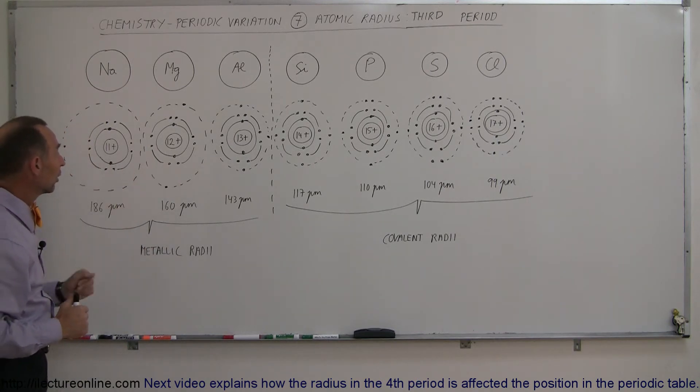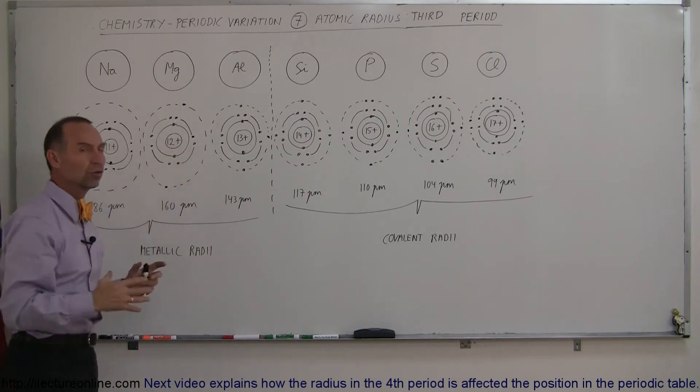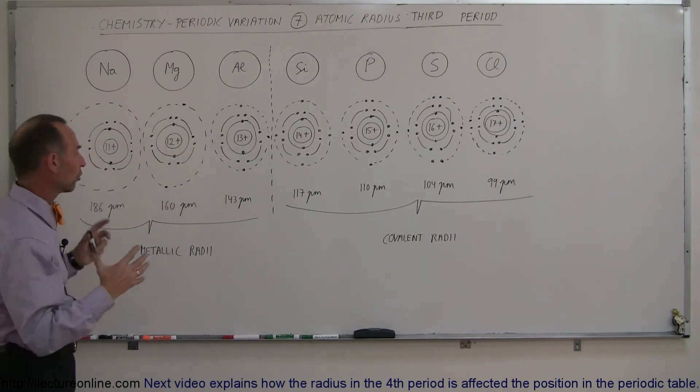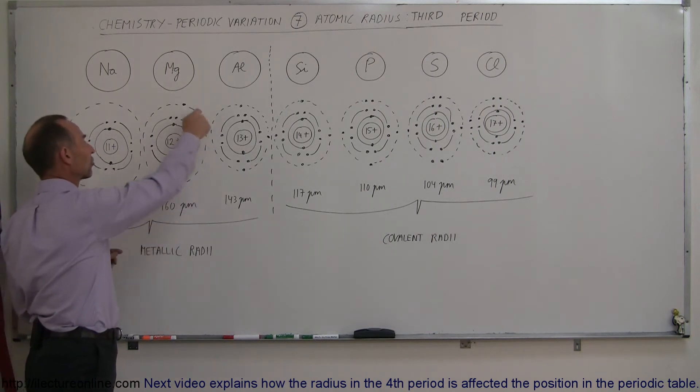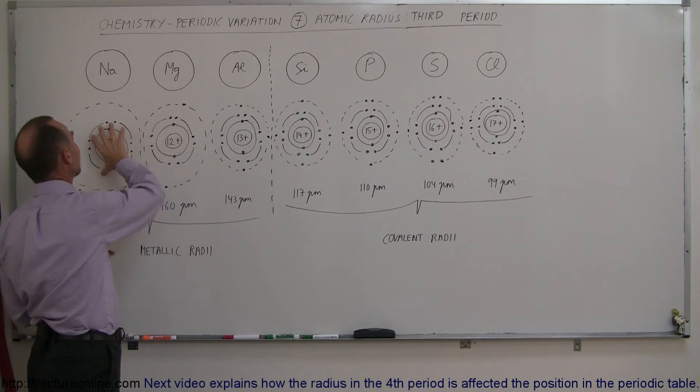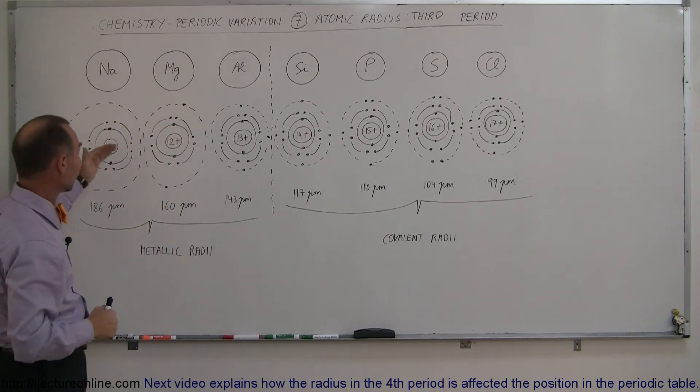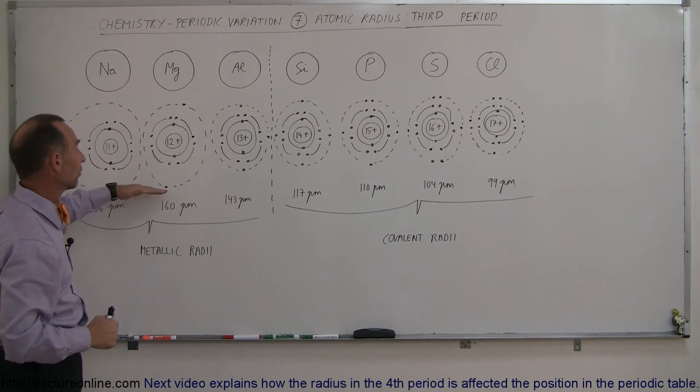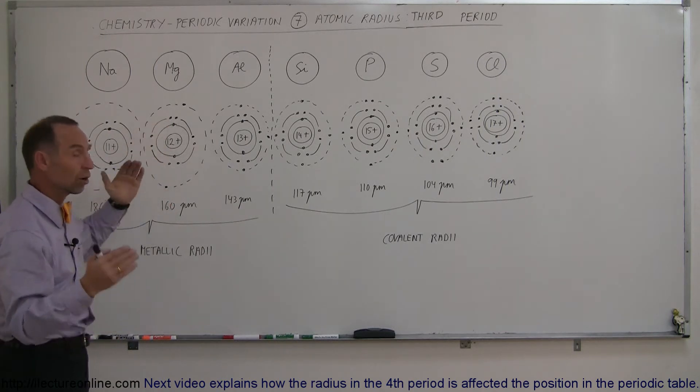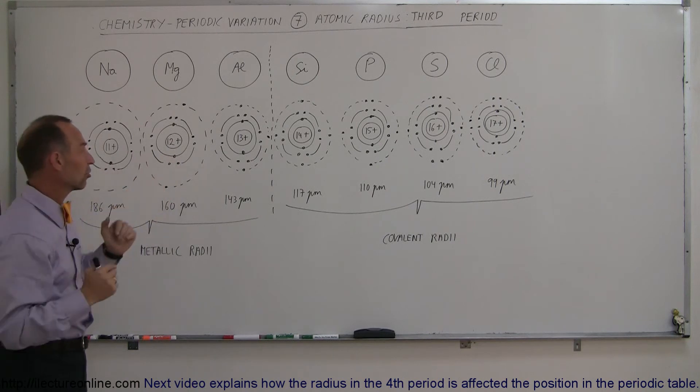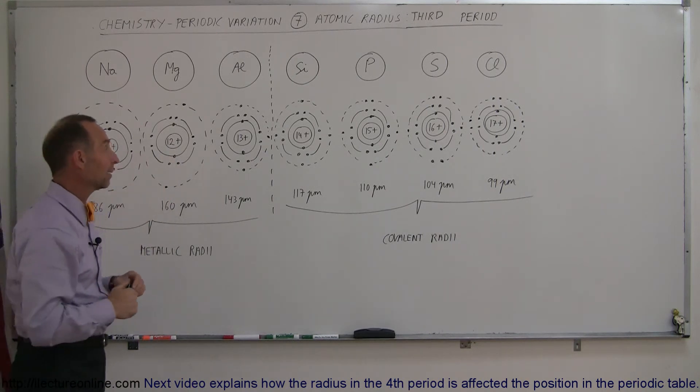Then if we go to the next element, magnesium, notice it has one extra charge in the nucleus so there's a stronger force attracting now the two extra electrons. Notice the screening effect for magnesium is the same as it is for sodium because it has the same ten electrons around the nucleus in the first and second energy levels. Therefore since there's no additional screening but a little bit more positive charge, the electrons in the third energy level get pulled a little bit closer in, forming a smaller atom.